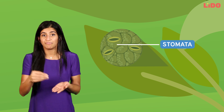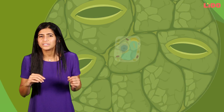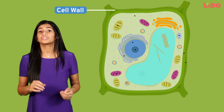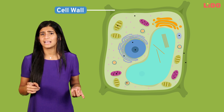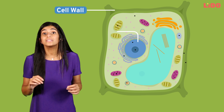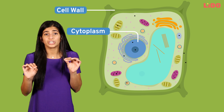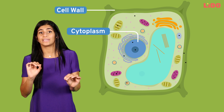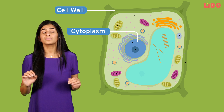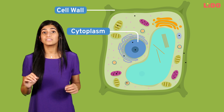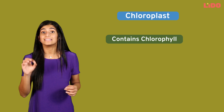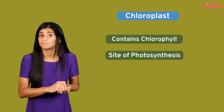Now that all three components have reached the leaf, we zoom into an individual cell. This cell has a thick wall around it, which is a characteristic of plant cells — animal cells don't have a cell wall. Within this, there is a jelly-like substance called cytoplasm in which several structures such as the nucleus float. However, the most important part for photosynthesis is a structure called the chloroplast. It contains the chlorophyll pigment and is therefore the site where photosynthesis takes place.